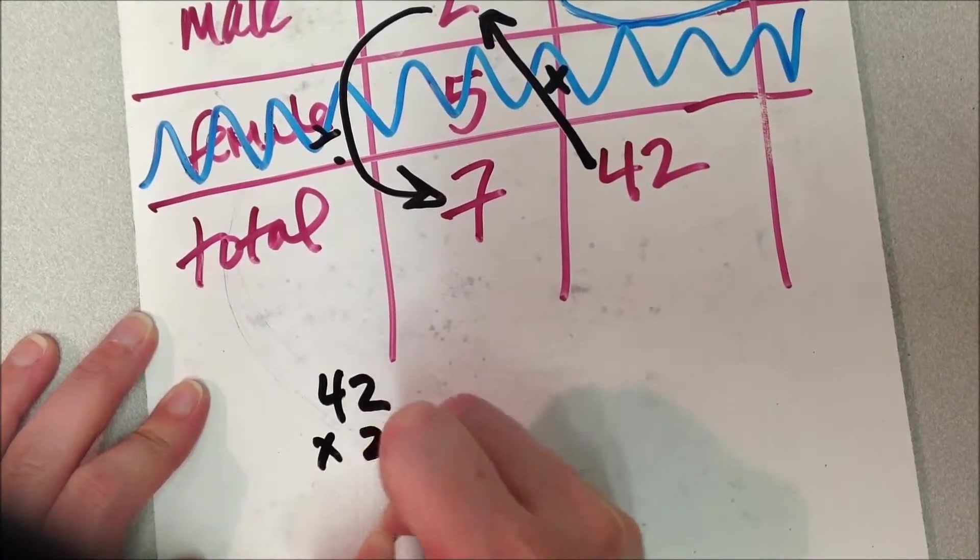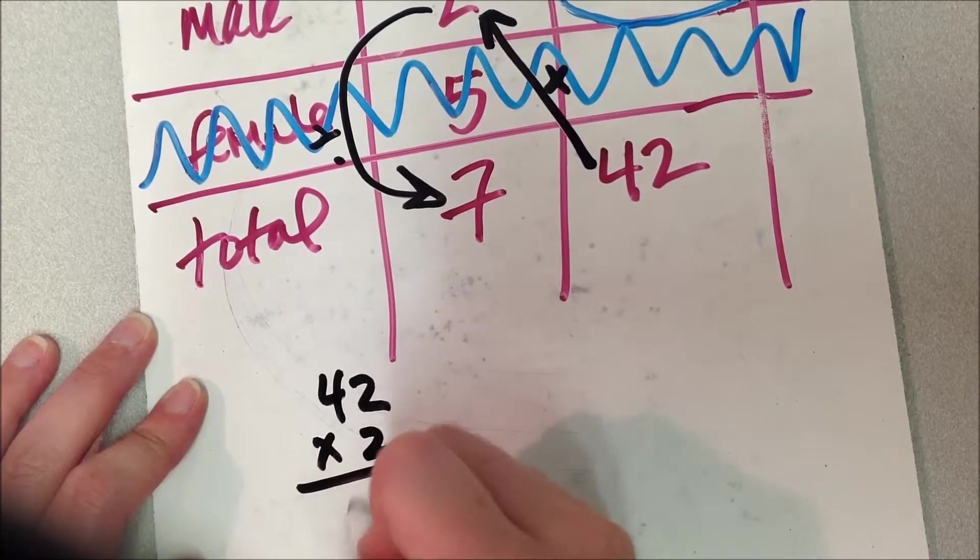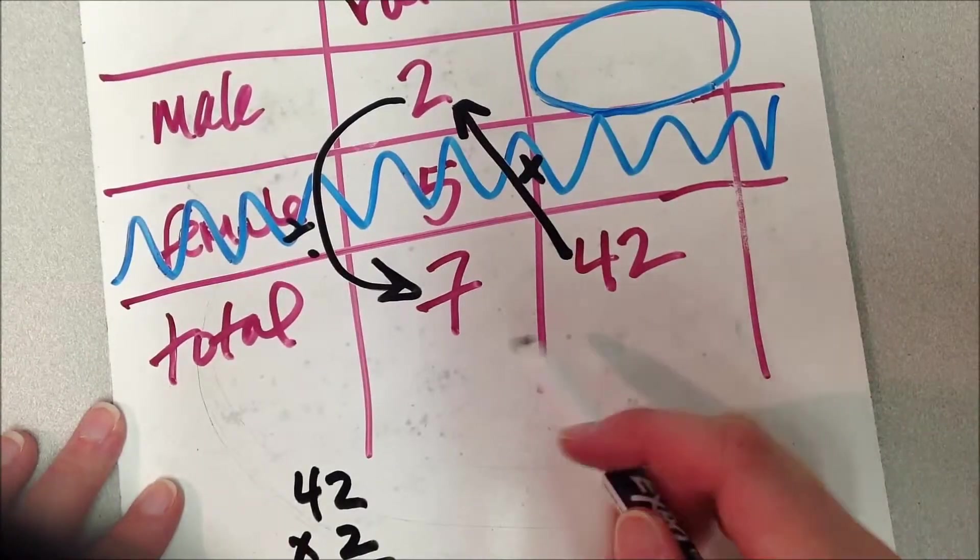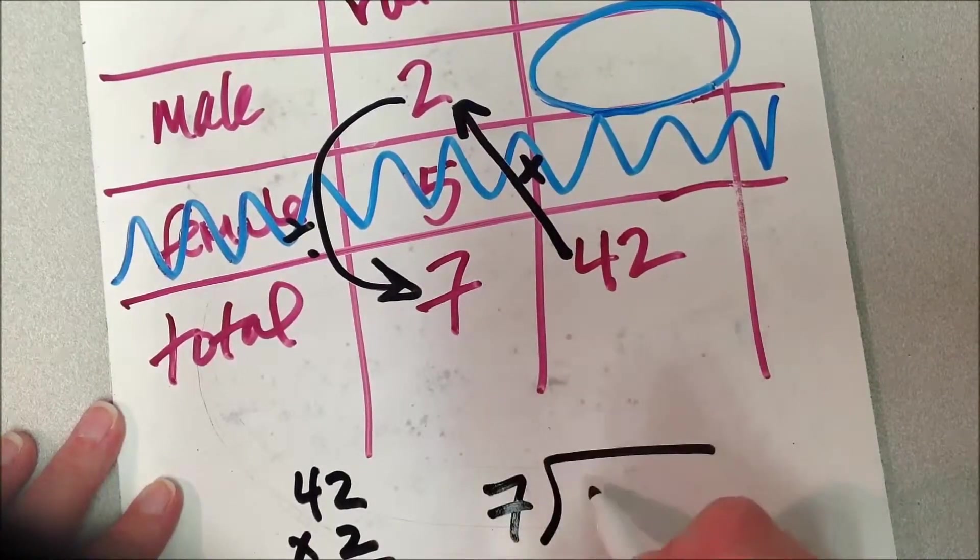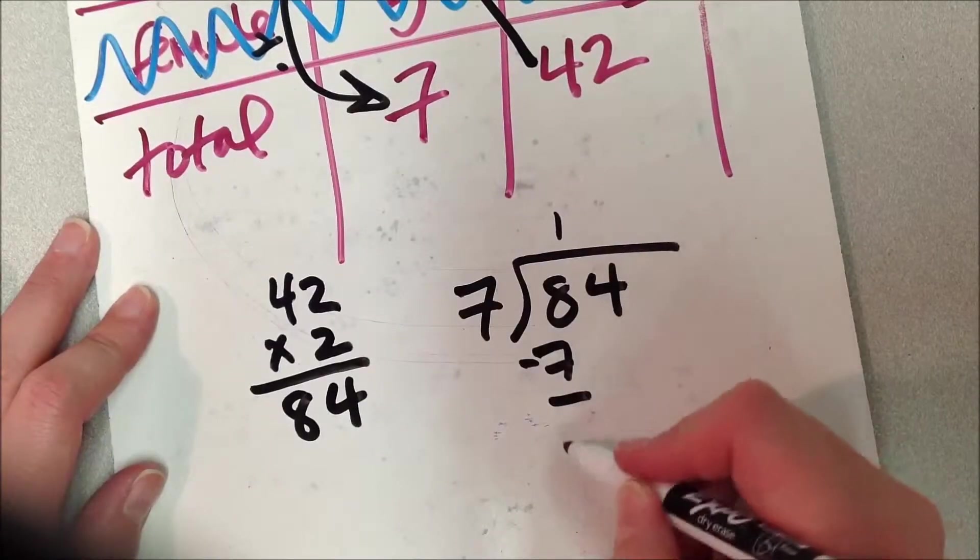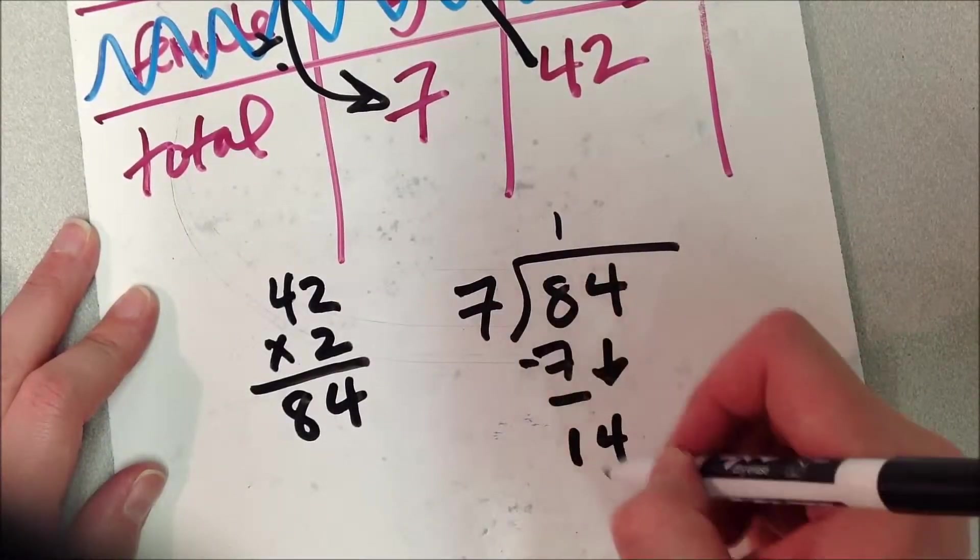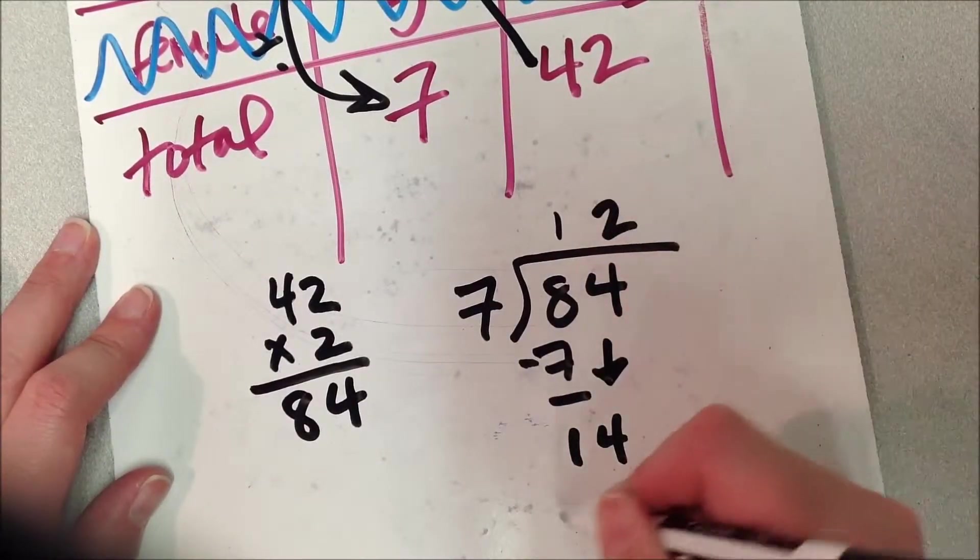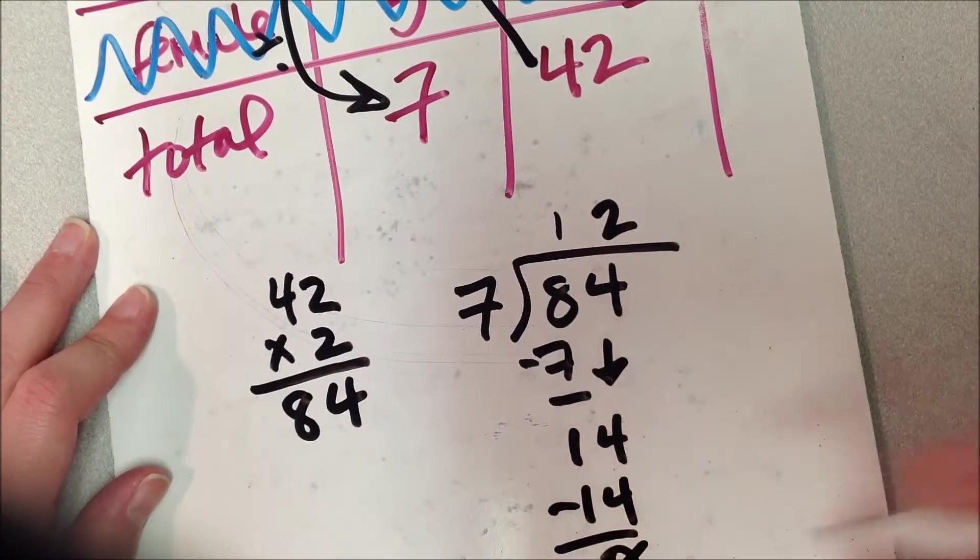Let's do that. It's going to be 42 times 2, which is 84. And then I'm going to divide by 7. Goes once, got one left over, drop my 4 down, 17 to 14 goes twice.